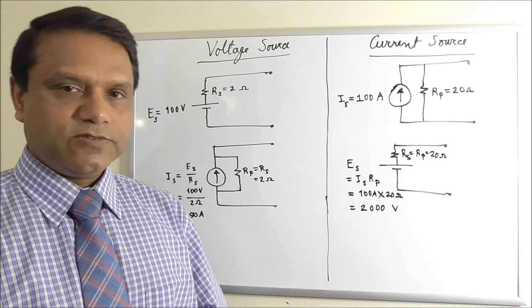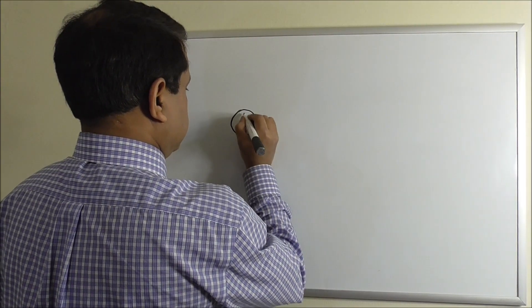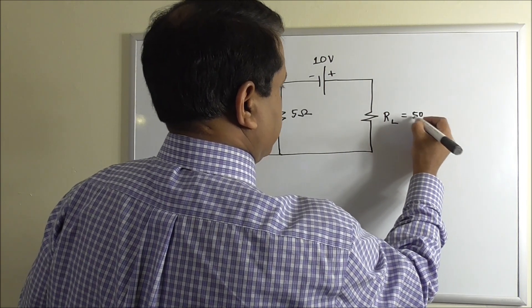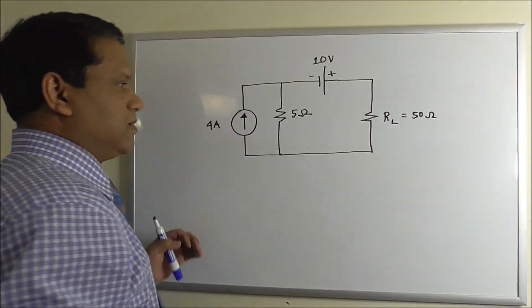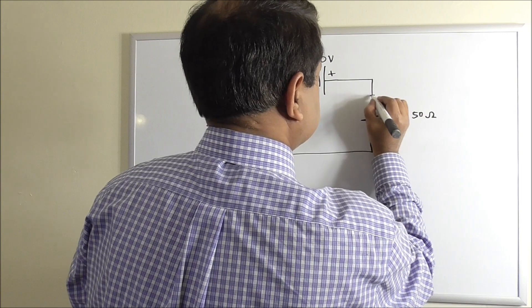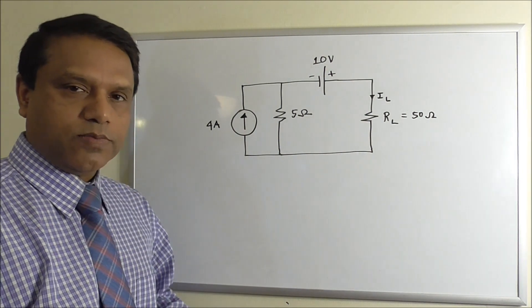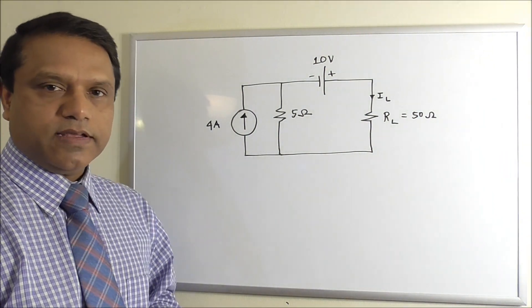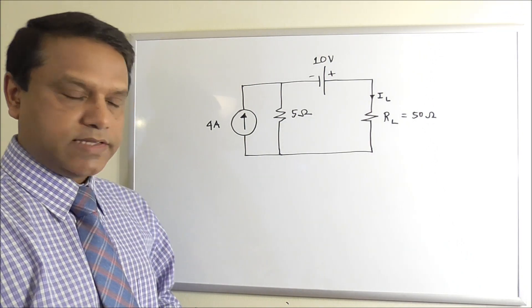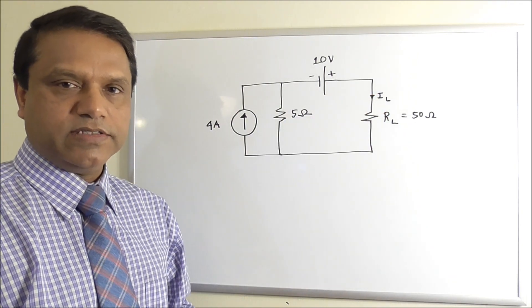Let's do a simple example to demonstrate the effectiveness of this technique. We have a circuit with a load resistance of 50 ohms, and we need to find the current through the load. We could use techniques like branch current, mesh current, or nodal analysis to find this current, but we can solve it in a simpler way using source conversion.